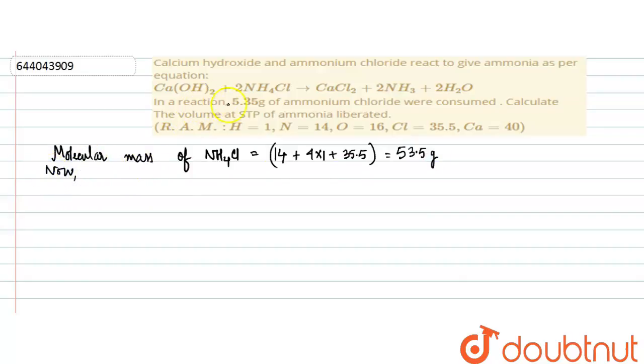From the reaction we can see that one mole of NH4Cl produces 1 mole of NH3.